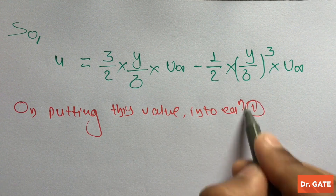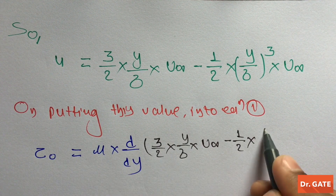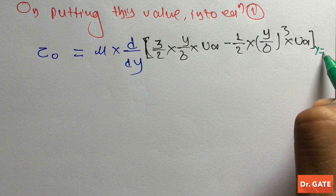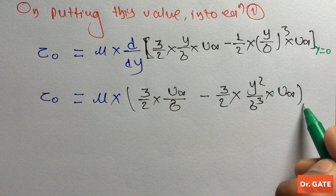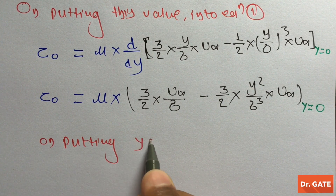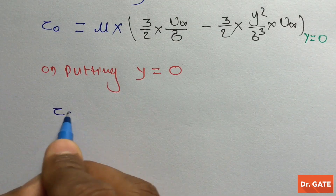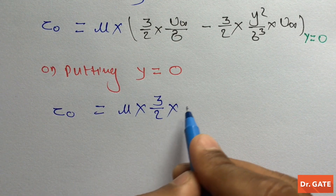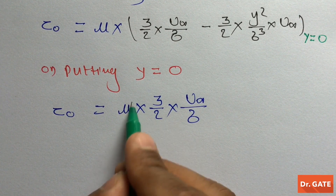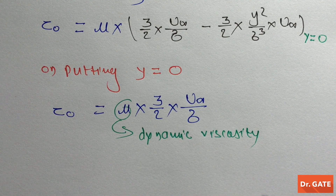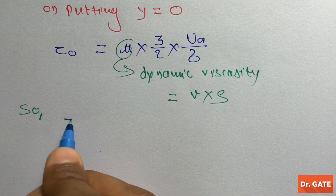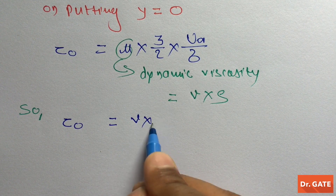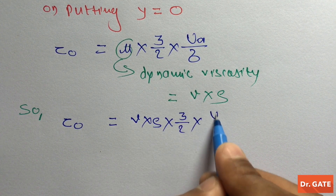On putting this value into equation 1, we get τ₀ at y = 0. On solving this differentiation and putting y = 0, we get τ₀ = mu × (3/2) × (u∞ / δ). Here mu is the dynamic viscosity, which equals kinematic viscosity times density. So τ₀ = ν × ρ × (3/2) × (u∞ / δ).